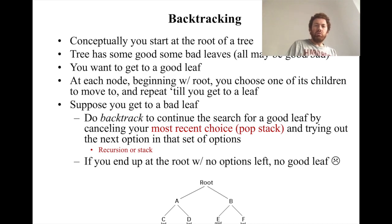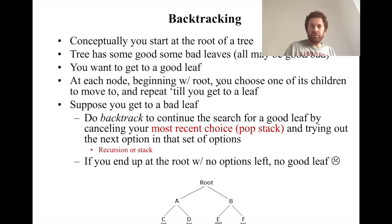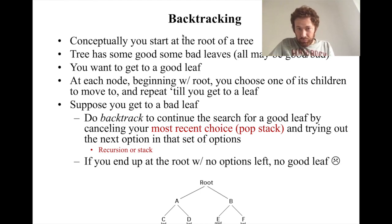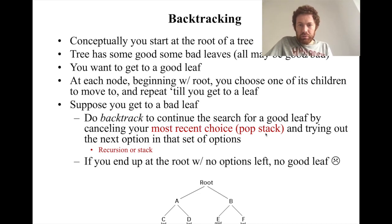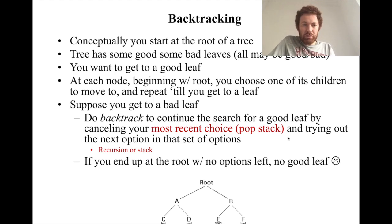Conceptually, think of a tree where the root is your starting point. It has some good leaves and some bad leaves. You want to get to a good leaf, but at each node after the root you choose one of its children to move to and repeat until you reach a leaf. Backtracking means cancelling your most recent choice and trying the next option in that set of options to continue the search for a good leaf.